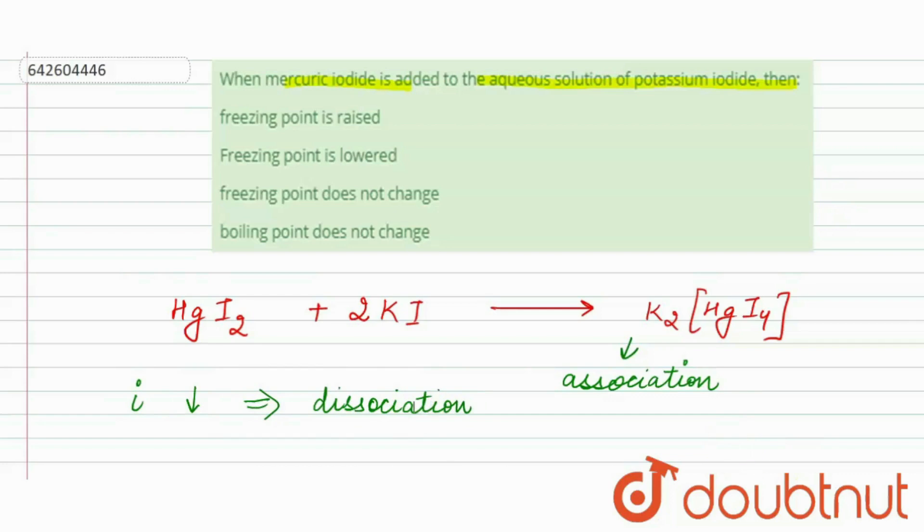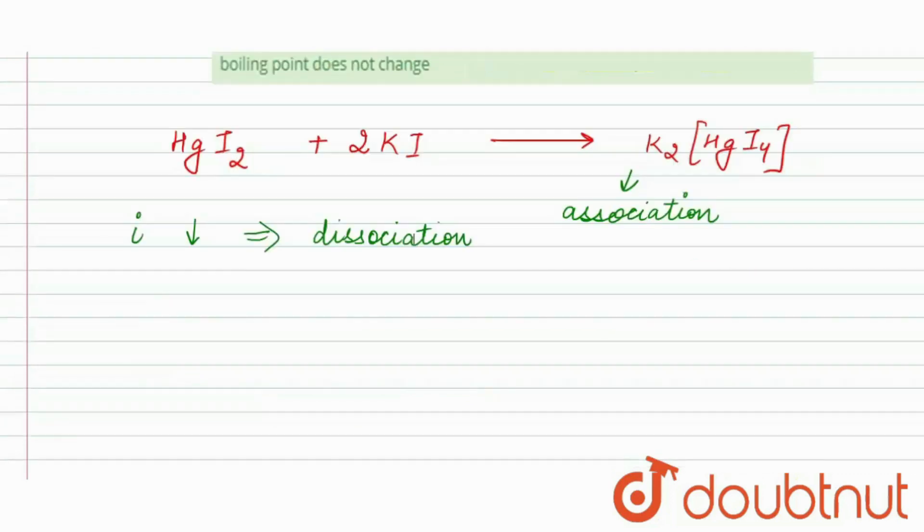And it can also be written as i is equal to alpha n plus 1 minus alpha. Here alpha is the degree of dissociation.